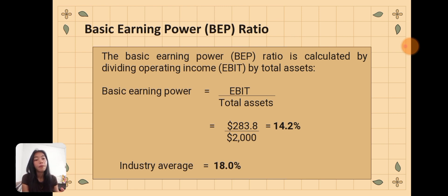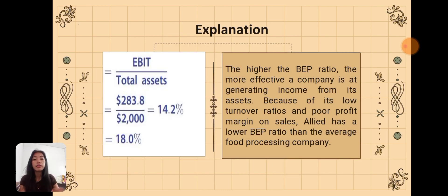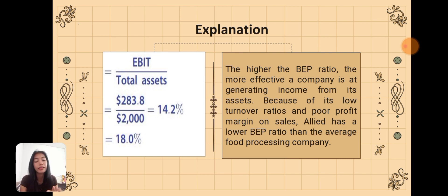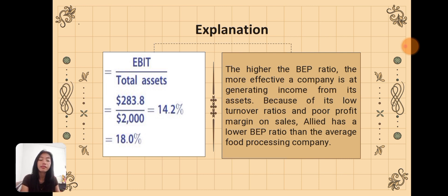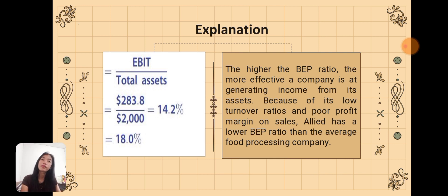The industry average for food industry companies is 18.0%. Since Allied Food Products' BEP ratio of 14.2% is below the industry average of 18.0%, it has a lower result. This is due to its low turnover ratios and poor profit margins and sales, meaning Allied is less effective than the average food processing company at generating income from its assets.